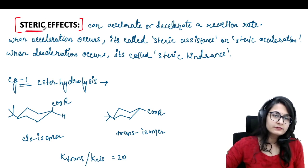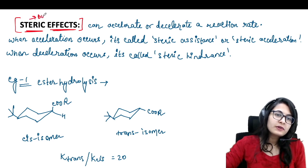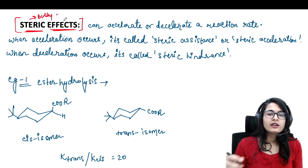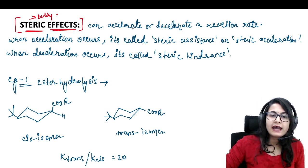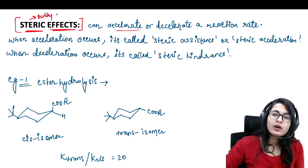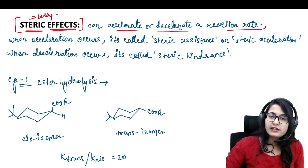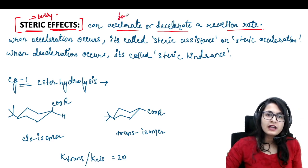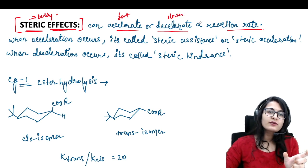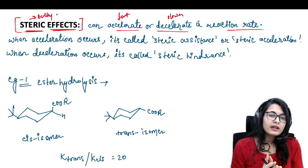So first things first — steric effects. What are steric effects? They are caused because of a bulky group. Because of a bulky group, what can happen? It can accelerate a reaction or it can decelerate — which means lower down the rate of a reaction. So accelerate is to make a reaction faster and decelerate is to make a reaction slower. This is what we are going to talk about in today's session.